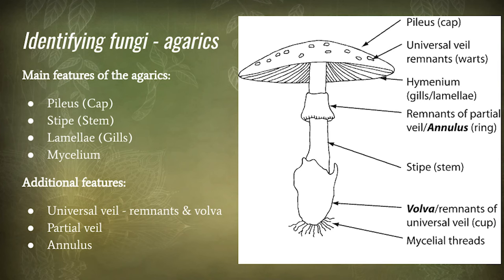Other features are partial veils. Some fungi have this beautiful cobweb-like coating to the cap, and as the cap expands this partial veil peels away. In some cases these partial veils are left as an annulus or a skirt. All these terms are illustrated in the illustration on the right.